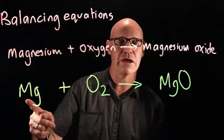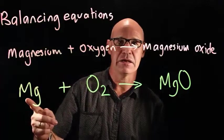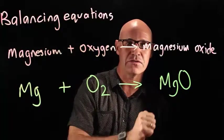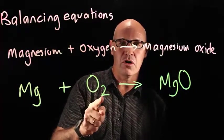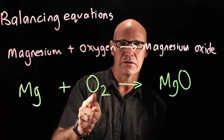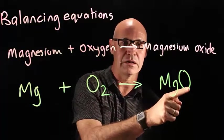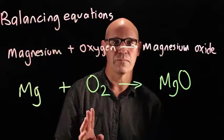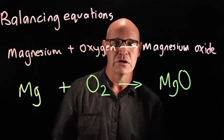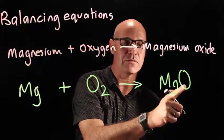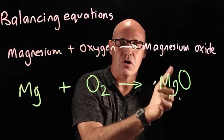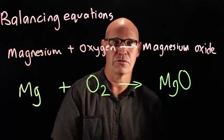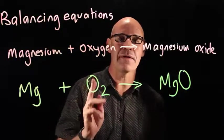So we've got one atom of magnesium here on the reactant side, and we've got one atom of magnesium here on the product side — so far so good. But now we've got two oxygens on the reactant side and only one on the product side. So that can't do — it's not balanced.